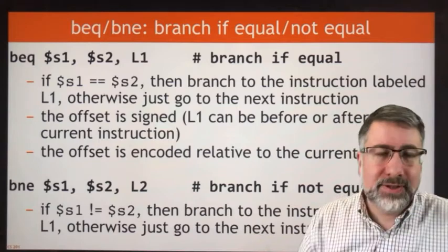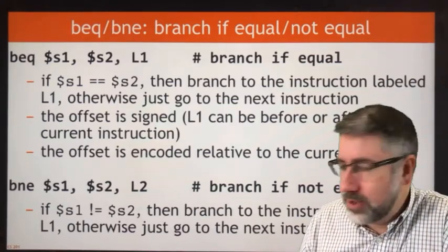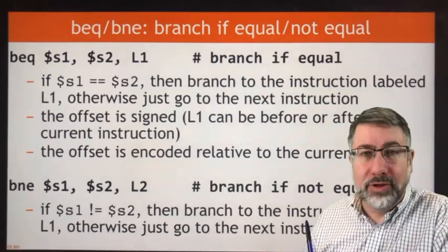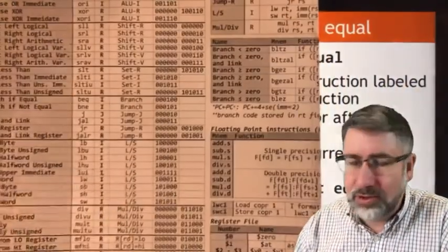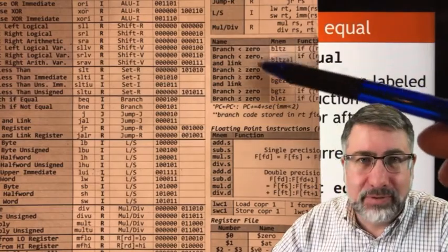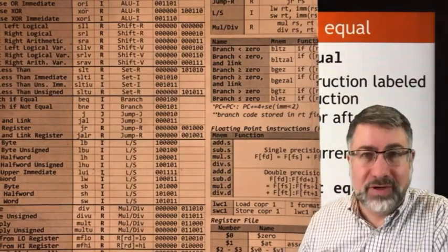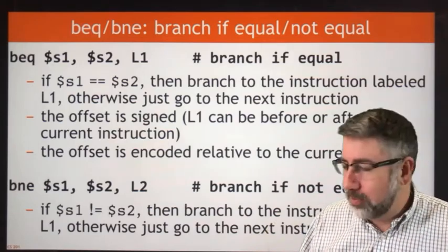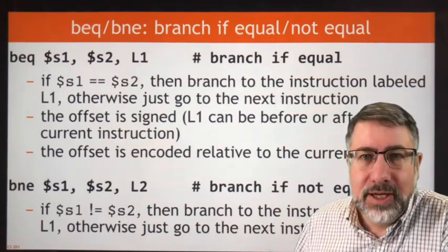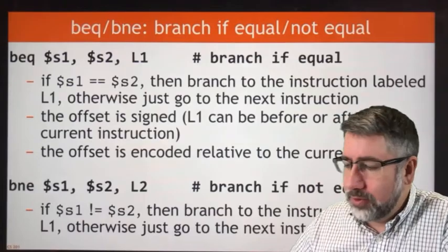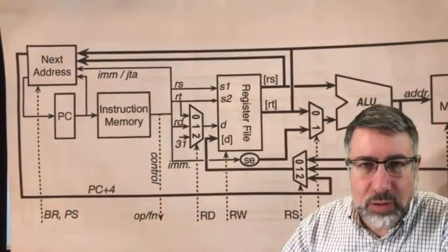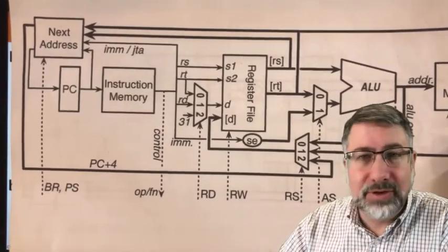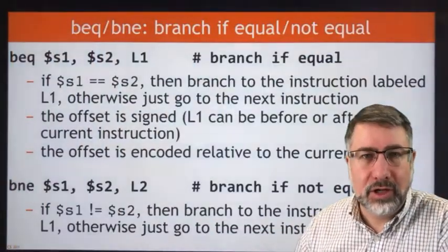We have two variants: branch if equal and branch if not equal. We also have a few conditional branches that can be related to zero, which we can use as well. When it comes to implementing them, they're a little bit more work, but they still exist. When we look at the machine itself, we're mostly going to look at the equality and inequality branches because those are a bit simpler to understand in terms of the way the hardware works.